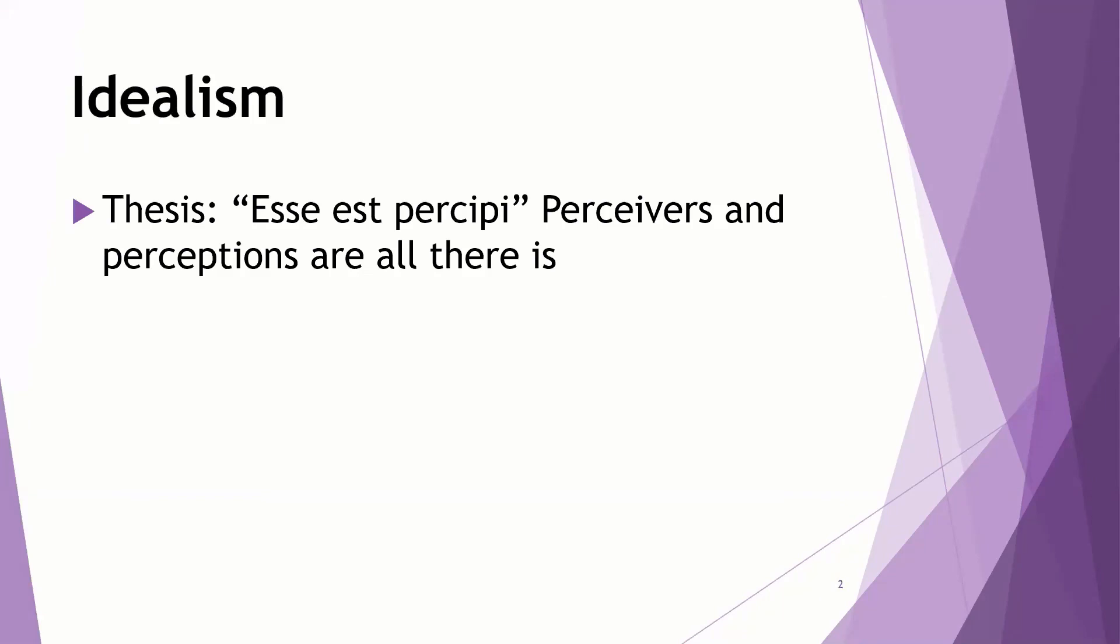So idealism, the thesis of idealism, could be summed up in the Latin phrase that Berkeley used, esse est percipi. This means to be is to perceive, or to be perceived.